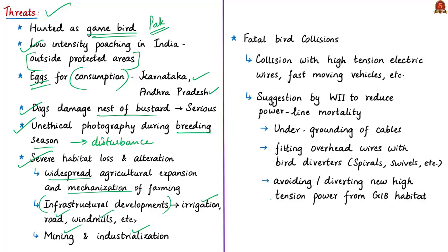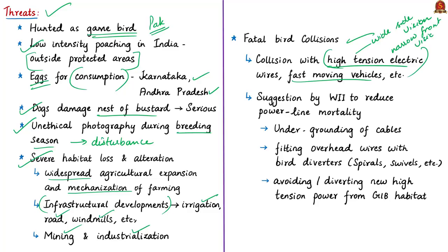Another major threat is fatal bird collisions — these birds collide with high-tension electric wires, fast-moving vehicles, and other human structures in industrial development zones near bustard areas. The reason for these collisions is that bustards have wide sideways vision to maximize predator detection, but narrow frontal vision. Due to their habit of scanning the ground while flying, they cannot detect power lines ahead of them. This makes them vulnerable to collision with power lines, resulting in death from impact, injuries, or electrocution.